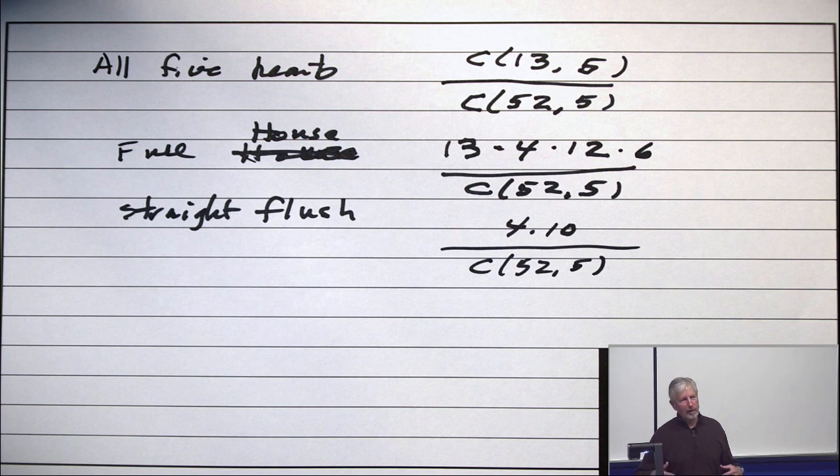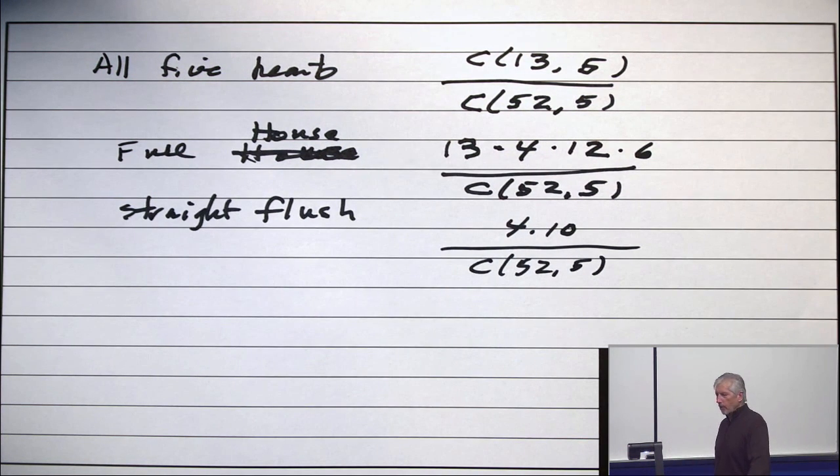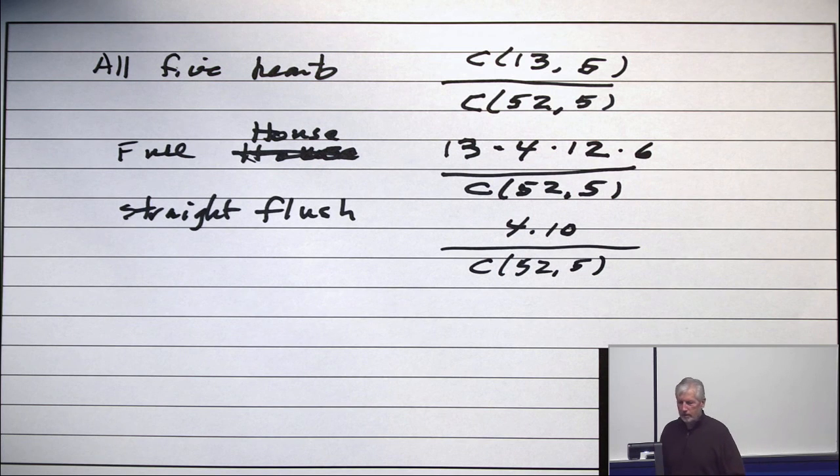So they quickly figured out what was going on and they started putting more decks. First they went to two, but a better mathematician can count cards with two decks. Now, I think they use five or six. And without a computer, you cannot count cards with six decks.